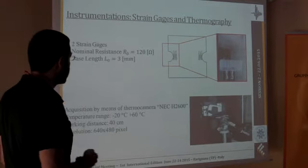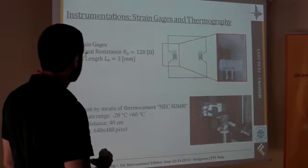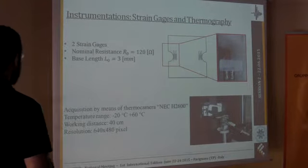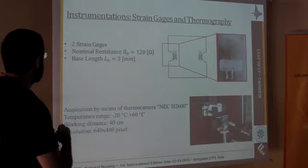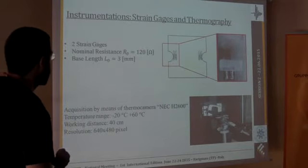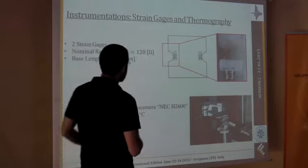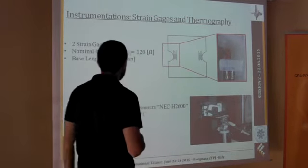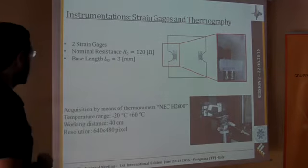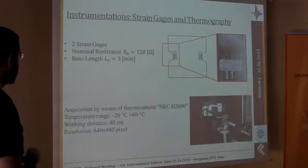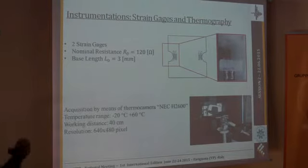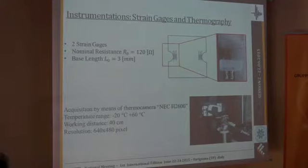The specimen, I will give you in a few minutes some more details on the specimen, is also equipped by two strain gauges with a nominal resistance, and with a base length of 3 mm, which are placed here in correspondence of the two slots that are cut inside the samples. And also, the equipment was also provided with a thermocamera, with a temperature range between minus 20 to plus 60, that was placed at a working distance and given the resolution.